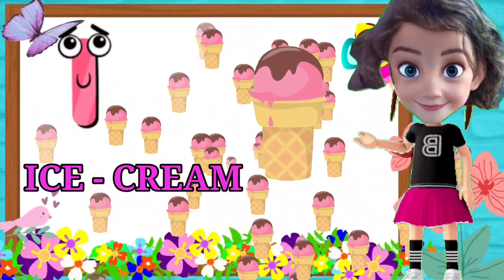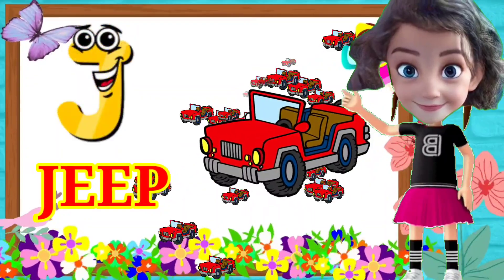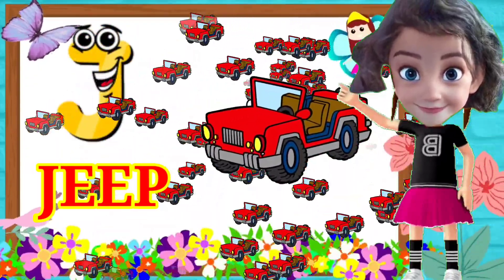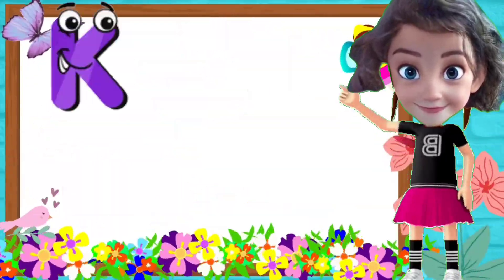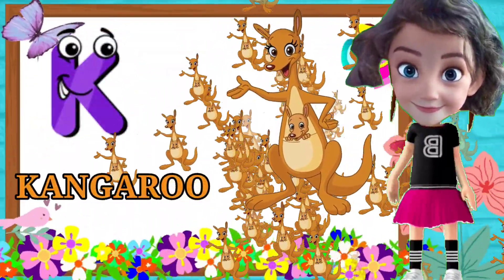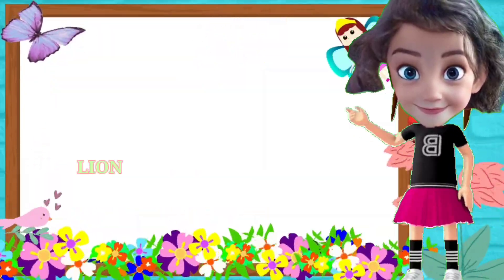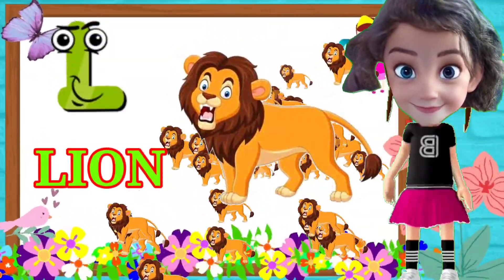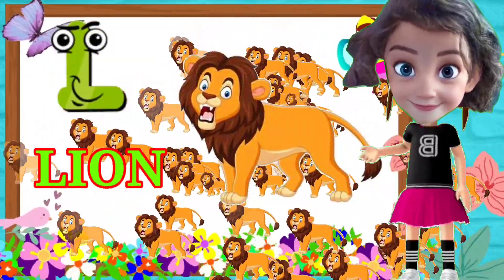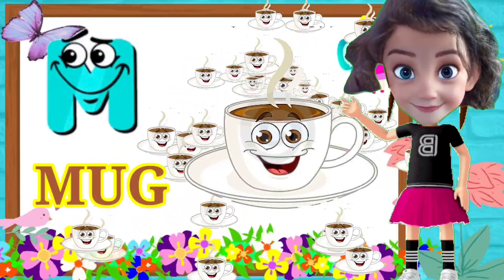I for ice cream, J for jeep, K for kangaroo, L for lion.